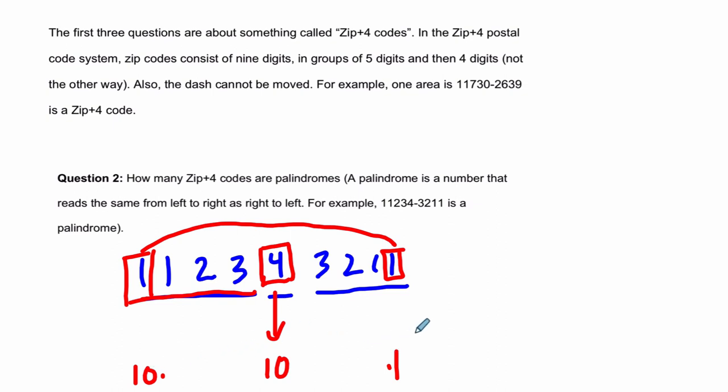So altogether, there are ten times one possibilities. And the same is true here. Whatever ten numbers I can choose for this spot, they have to be equal over here. So that's another ten and a one. And then here as well, ten. And one. And then another ten and one. And we're multiplying all those numbers. That's just ten to the fifth.